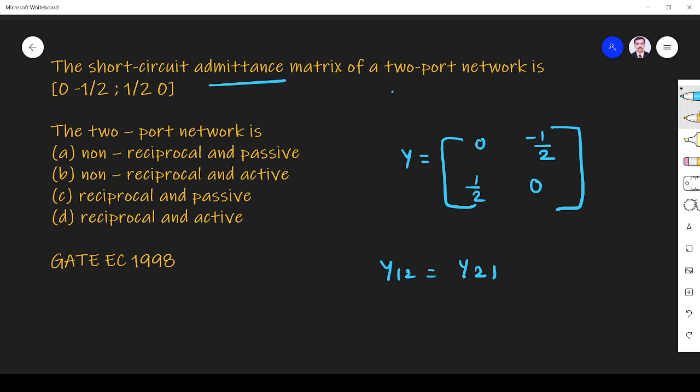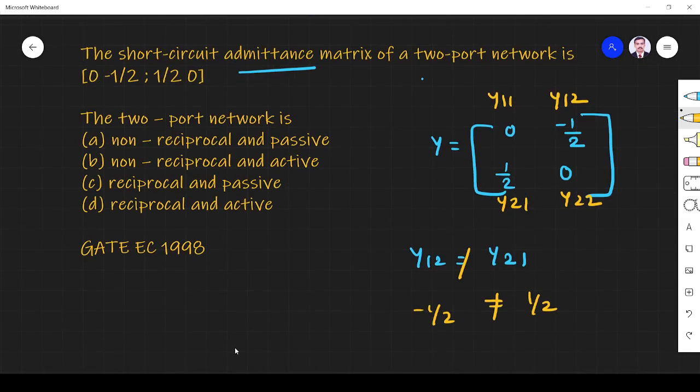So we know this Y matrix. This is Y11, this is Y12, this is Y21, Y22. Y12 is minus 1/2, Y21 is plus 1/2, so Y12 is not equal to Y21. So it is non-reciprocal. The given Y matrix is a non-reciprocal matrix.